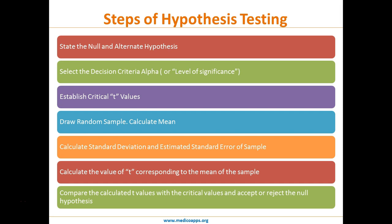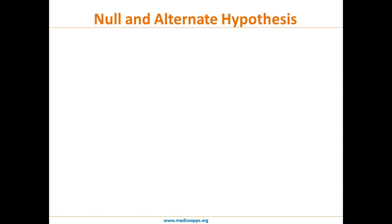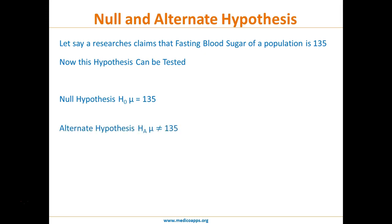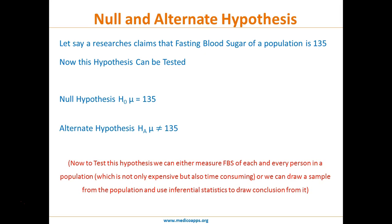Let's start with a hypothetical situation where a researcher claims that the fasting blood sugar of a given population is 135. For the hypothesis to be tested, we presume he is correct. The null hypothesis is that mu, the mean fasting blood sugar, equals 135, and the alternate hypothesis is that mu is not equal to 135.